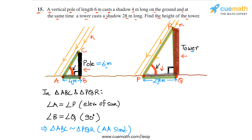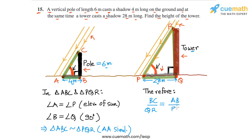Because the two triangles are similar, their sides must be proportional. Therefore, BC over QR — where BC is the pole's height and QR is the tower's height — equals AB over PQ, where AB is the pole's shadow and PQ is the tower's shadow. Plugging in the values: BC is 6 meters, QR is unknown, AB is 4 meters, and PQ is 28 meters.